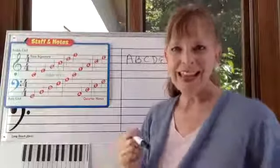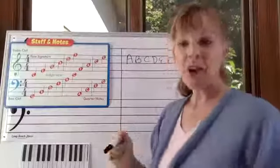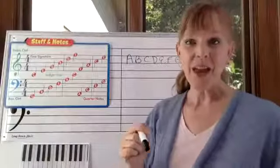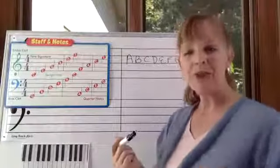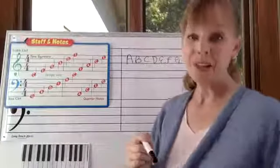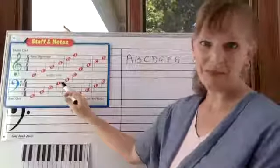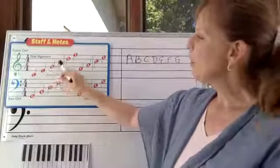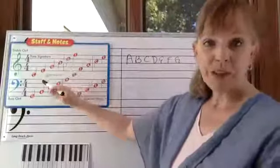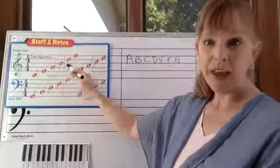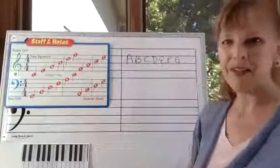You can also just do it with a chant: E, G, B, D, F. E, G, B, D, F. Those are the lines of the treble clef. Use a device to help you remember, because the bass clef lines are different. So, Every Good Boy Deserves Fudge. Remember, we start at the bottom and go up. Those are the lines of the treble clef.